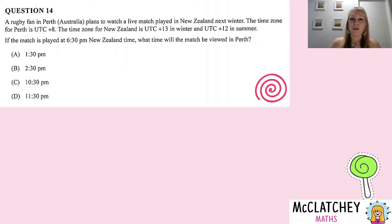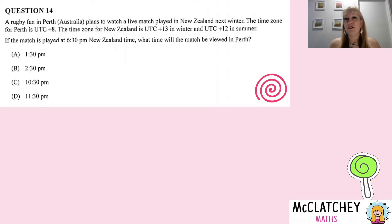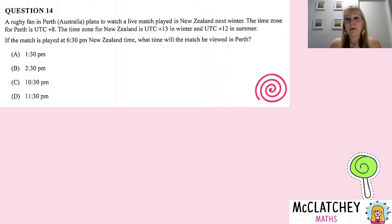Let's get into Question 14, a multiple choice question. A rugby fan in Perth, Australia plans to watch a live match played in New Zealand next winter. The time zone for Perth is UTC plus 8, and the time zone for New Zealand is UTC plus 13 in winter and UTC plus 12 in summer. If the match is played at 6:30 pm New Zealand time, what time will the match be viewed in Perth?